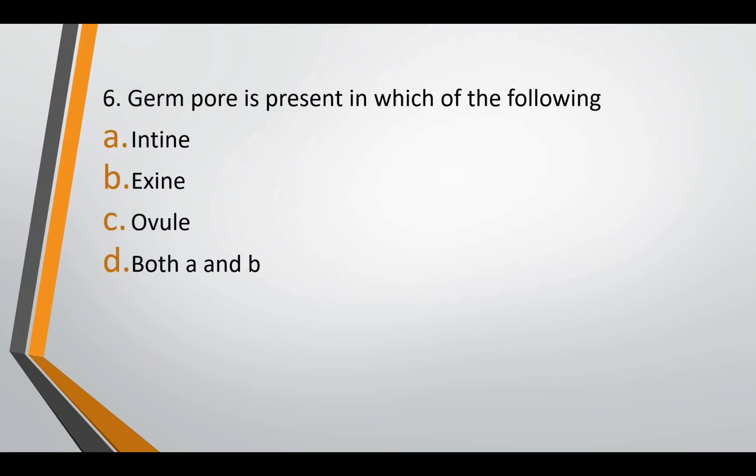Question six: germ pore is present in which of the following — intine, exine, ovule, or both intine and exine? The correct answer is option B — it is present in exine. The germ pore is the place in the exine where sporopollenin is absent, so from there the pollen tube can come out. Germ pores are pores present on exine and they lack sporopollenin.